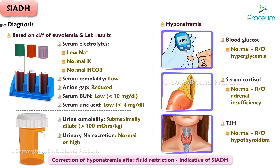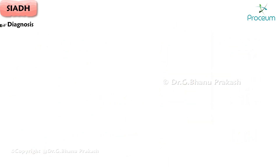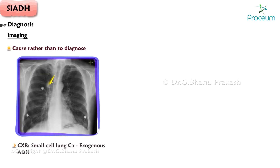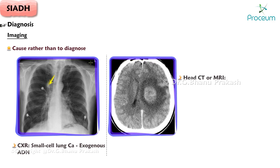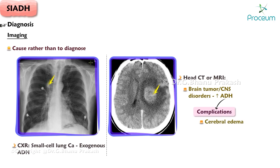Correction of hyponatremia after fluid restriction is indicative of SIADH. Imaging is used to find the cause rather than make the initial diagnosis. Chest X-ray may show small cell lung carcinoma. Head CT or MRI may show a brain tumor, other CNS disorder causing excessive antidiuretic hormone production, or cerebral edema — a complication of SIADH. Complications are typically neurologic, such as seizure or coma due to hyponatremia.